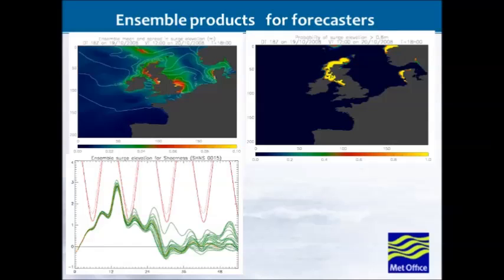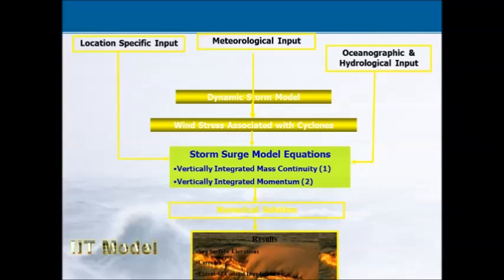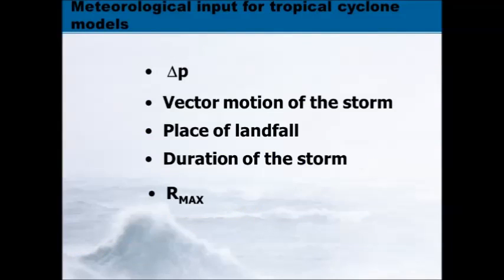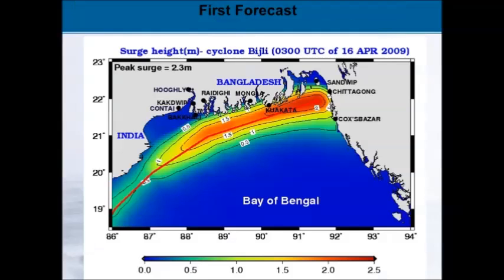The same approach applies to tropical cyclone models. The atmospheric forcing for tropical cyclone storm surge models tends not to come from numerical weather prediction, because NWP at the moment does not resolve hurricanes sufficiently well — though it's probably within the next ten years. Currently, operational storm surge modeling forced by tropical cyclones uses fairly simple parametric models of the wind fields, based on the central pressure drop, the direction of the storm, where it will make landfall, and the radius of maximum winds. These parameters determine much of the tropical forecasting we do, and they're still amenable to an ensemble approach.